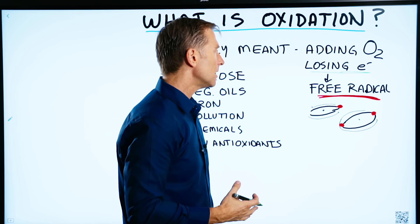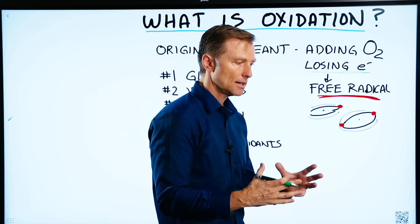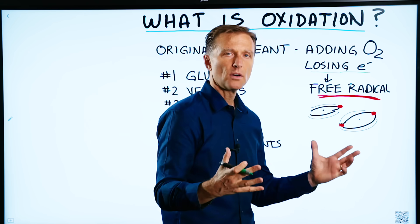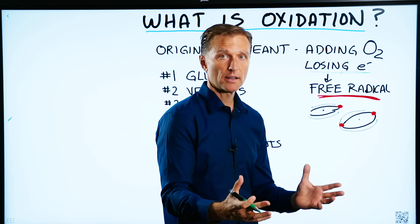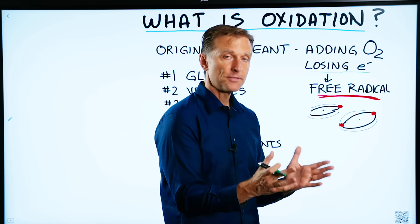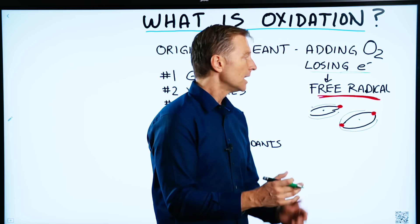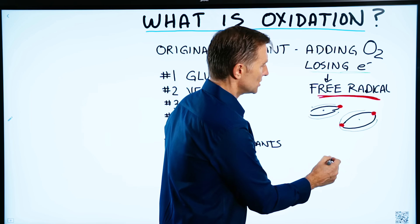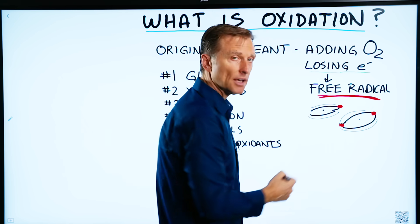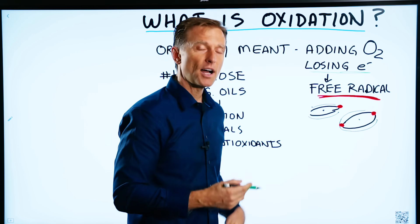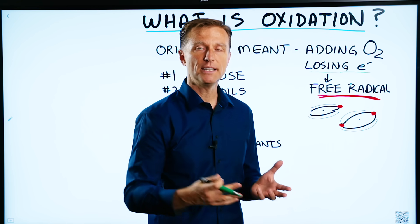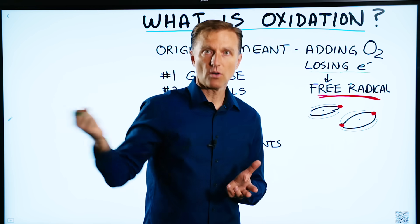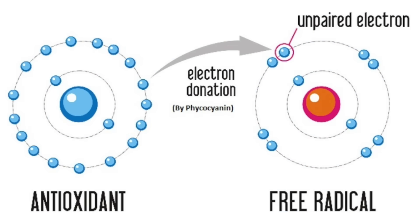Antioxidants always come in a group or a network in food. When an antioxidant donates an electron, it becomes unstable and it needs to borrow from another antioxidant. This is why you need a network of antioxidants.